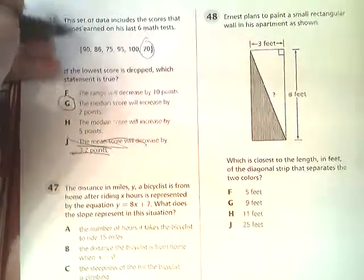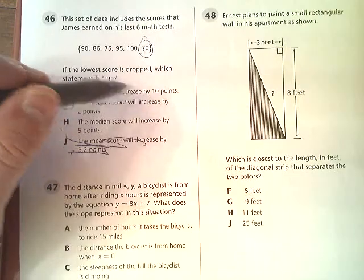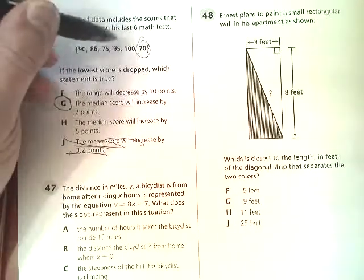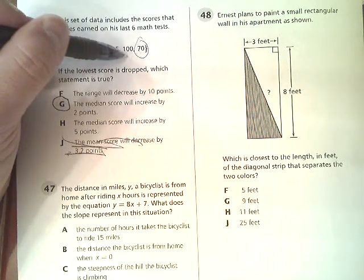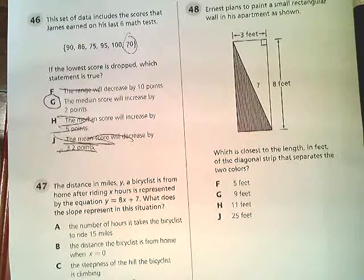And the range will change. It says the range decreases by 70 points. Well, your next highest number is 75, so if the mean is the lowest minus the highest, it only changes by 5 because you're only going up to the next lowest number. So F is out as well, so your answer is G.